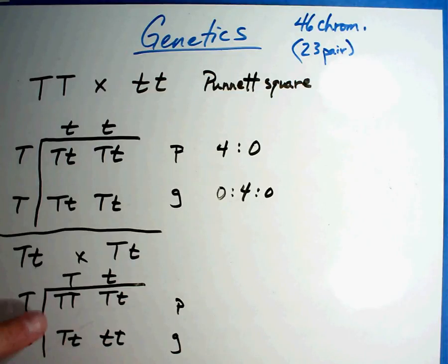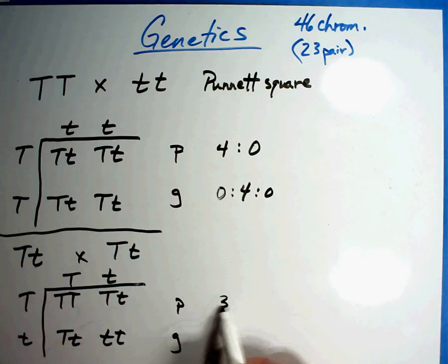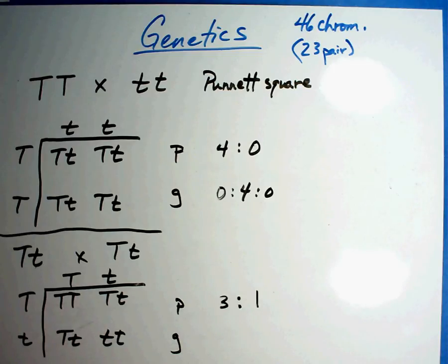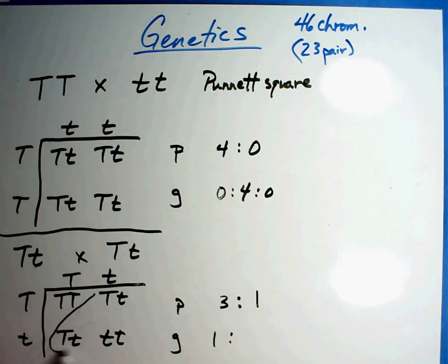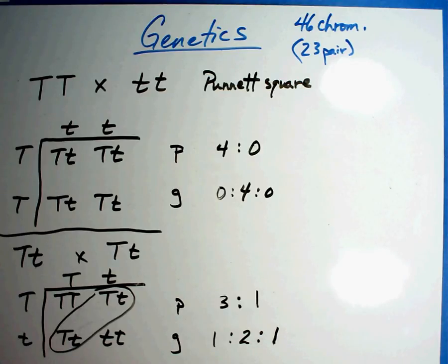Now let's see the phenotype and genotype for the second Punnett square. Phenotype of these four offspring: three of them are tall, one is short — three tall, one short option. In the genes, genotype: pure tall — one. Mixed tall — two of them. Pure short — one. What we can't see very well is inside the genes. We can see the phenotype very easily, but seeing it in the genes is a little bit more difficult.